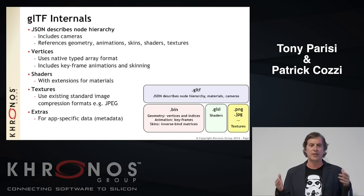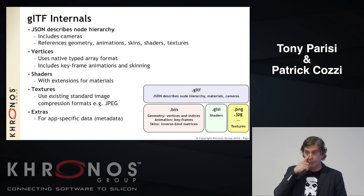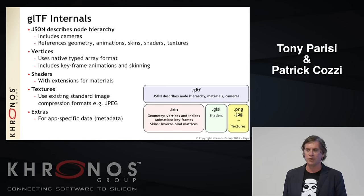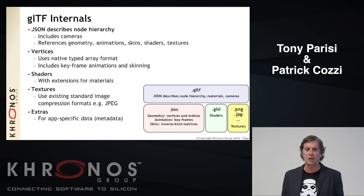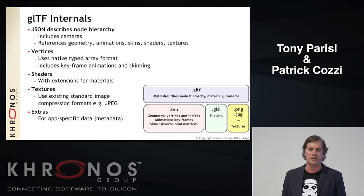We have full support for shaders — anything you write in GLSL can be brought in to control the full look of the scene. We also created an extension for common materials like Phong or Blinn-Lambert shading. We support standard web texture formats, and any object in the JSON can have an .extras feature for your own metadata.